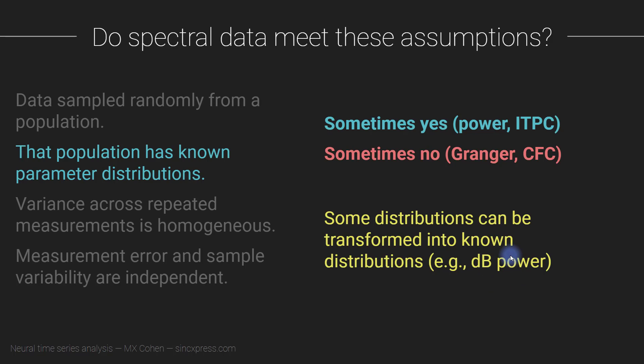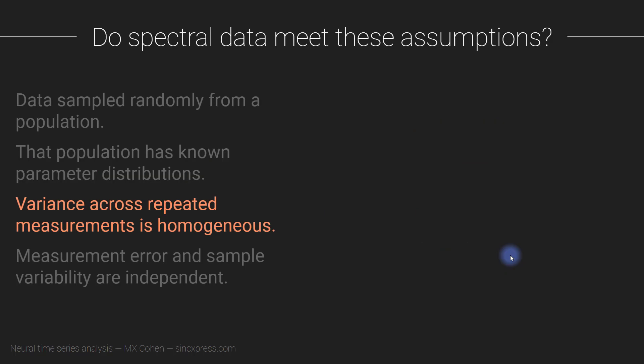Some distributions can actually be transformed into known distributions. For example, raw power is non-normally distributed, but decibel-normalized power — if you normalize your power time courses relative to a pre-stimulus baseline — will approach a Gaussian normal distribution under the null hypothesis.